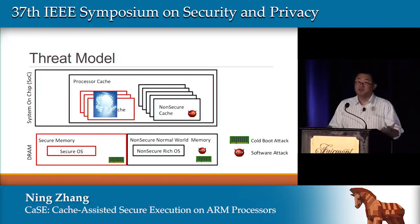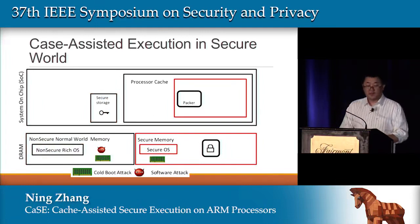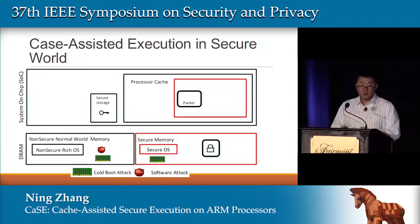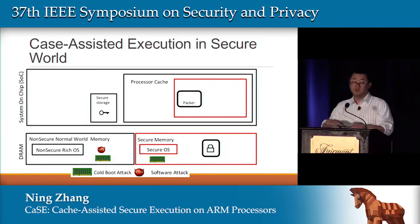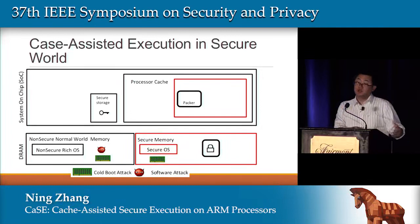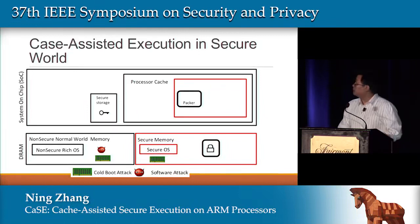So it sounds like the only place without attacker access is the secure cache — and that's the haven, so we're putting our system in there. We designed two execution modes: secure mode and non-secure mode. In secure mode, we use the secure cache as the execution environment memory. In non-secure mode, we use the non-secure cache. There are pros and cons to each, which are discussed in further detail in the paper.